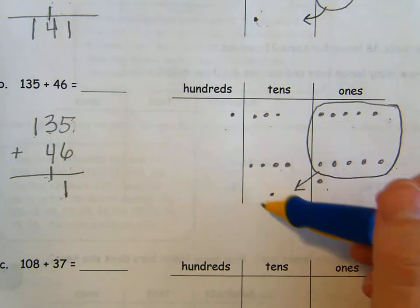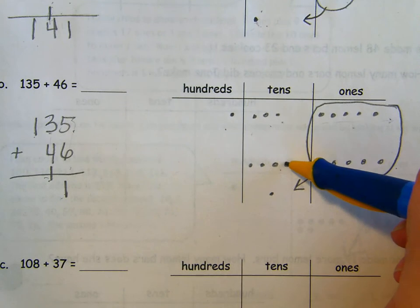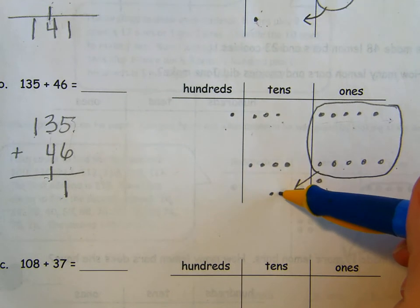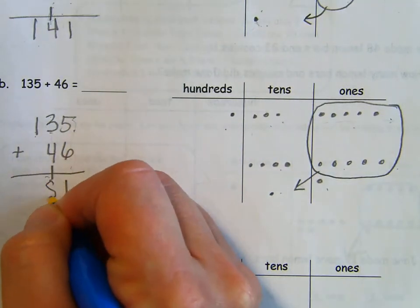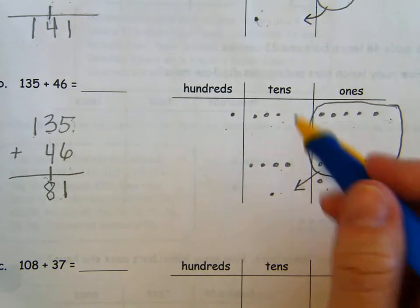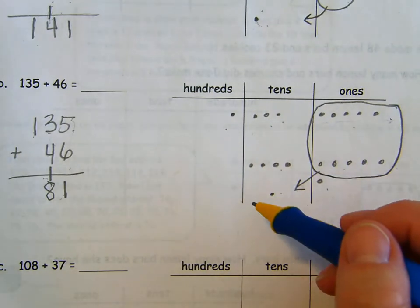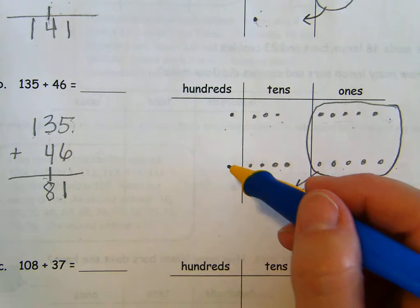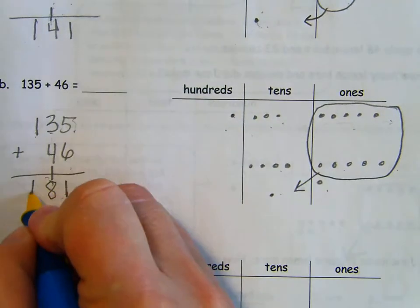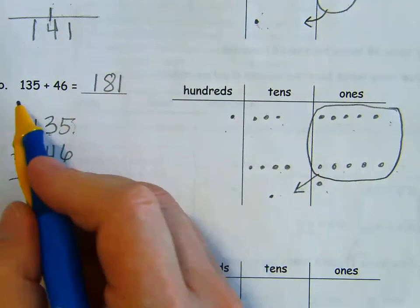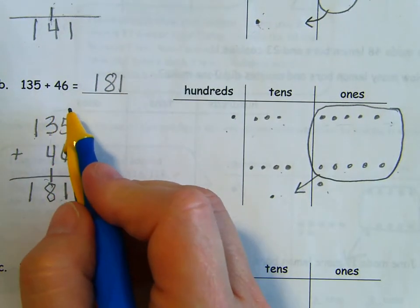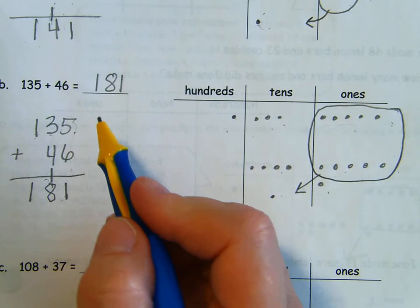Now I'm going to come over here and I'm going to add my tens. I had three plus four plus one. Three plus four is seven plus one more is eight. Do I have, can I make a hundred? Can I bundle? I can't yet. So I have 100 plus zero is 100. 135 plus 46 equals 181.